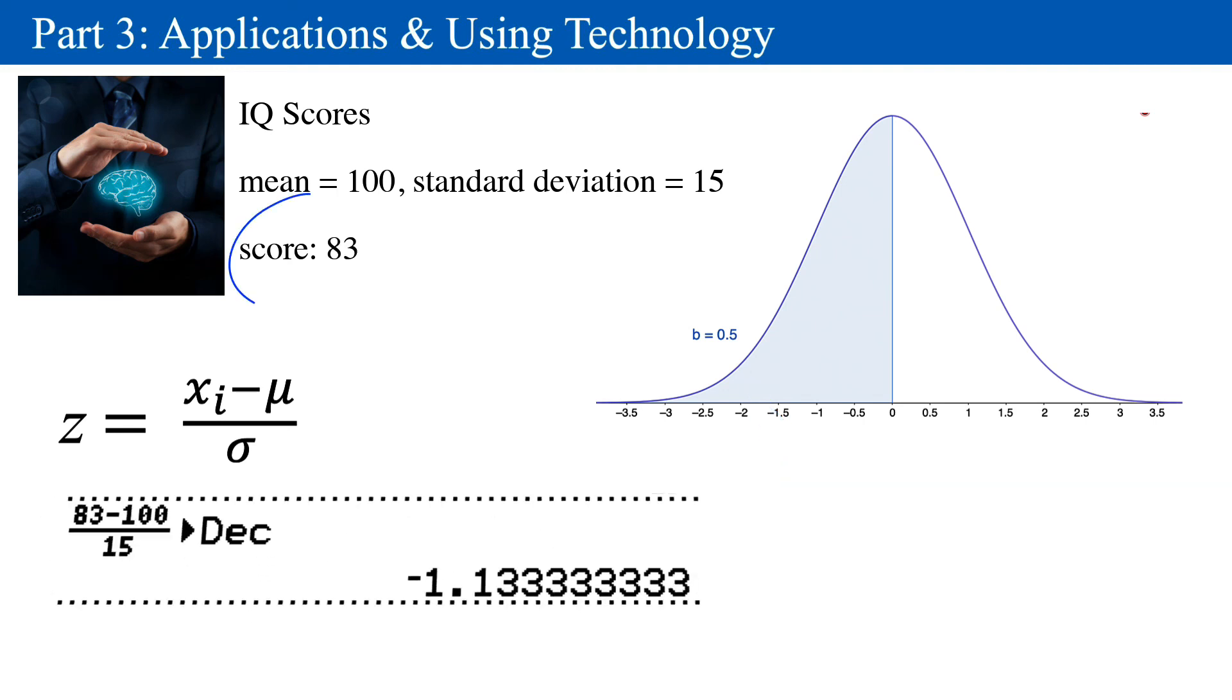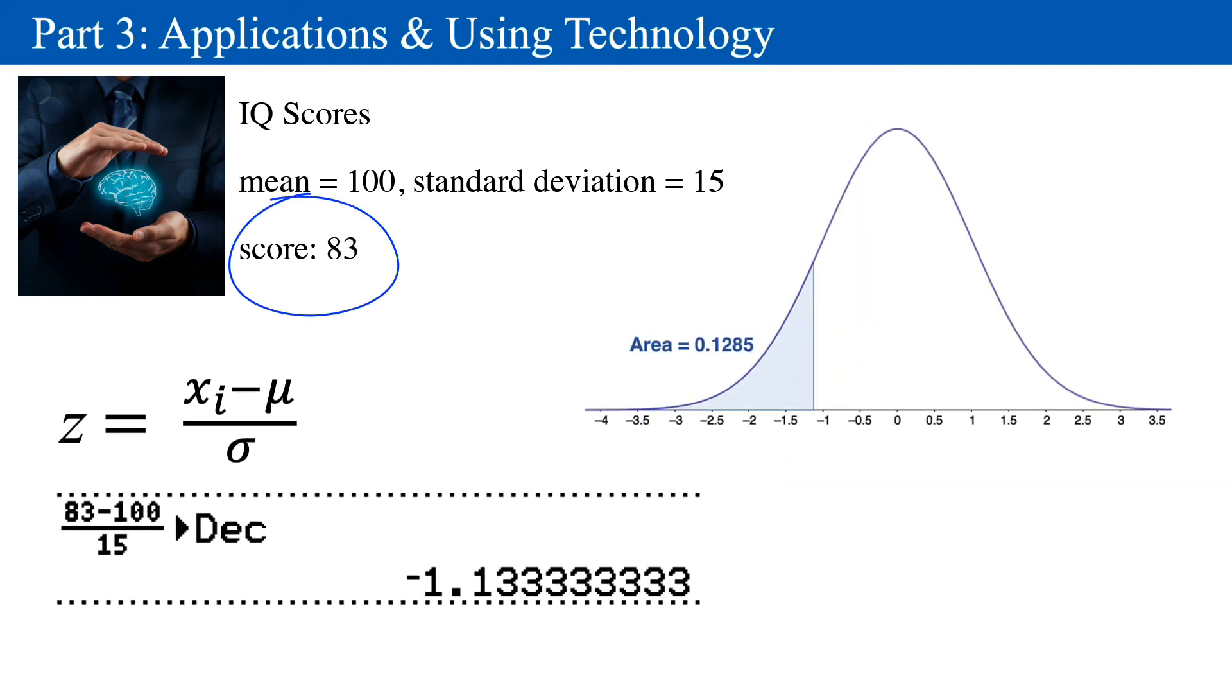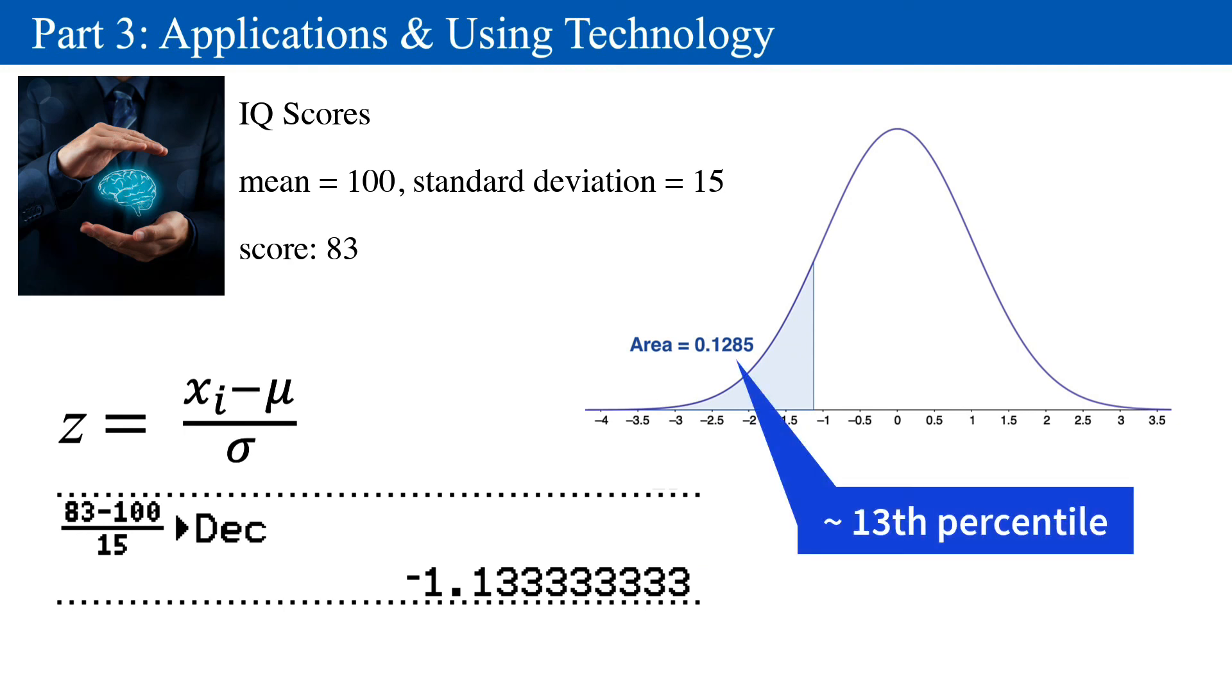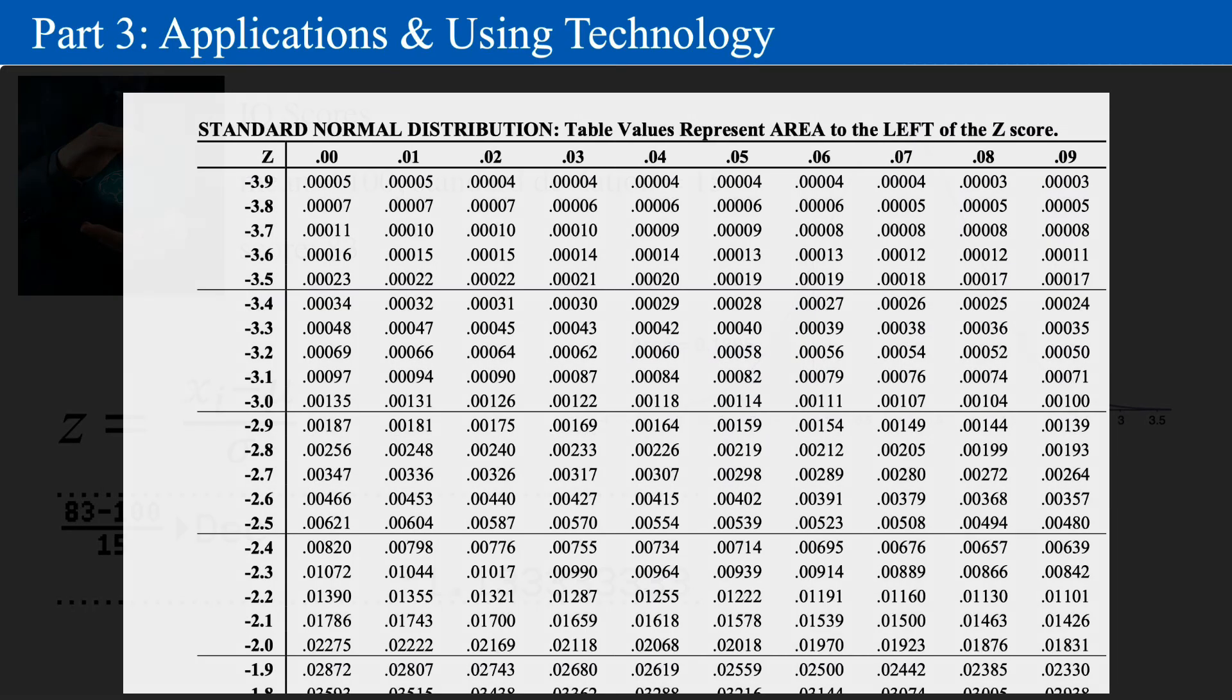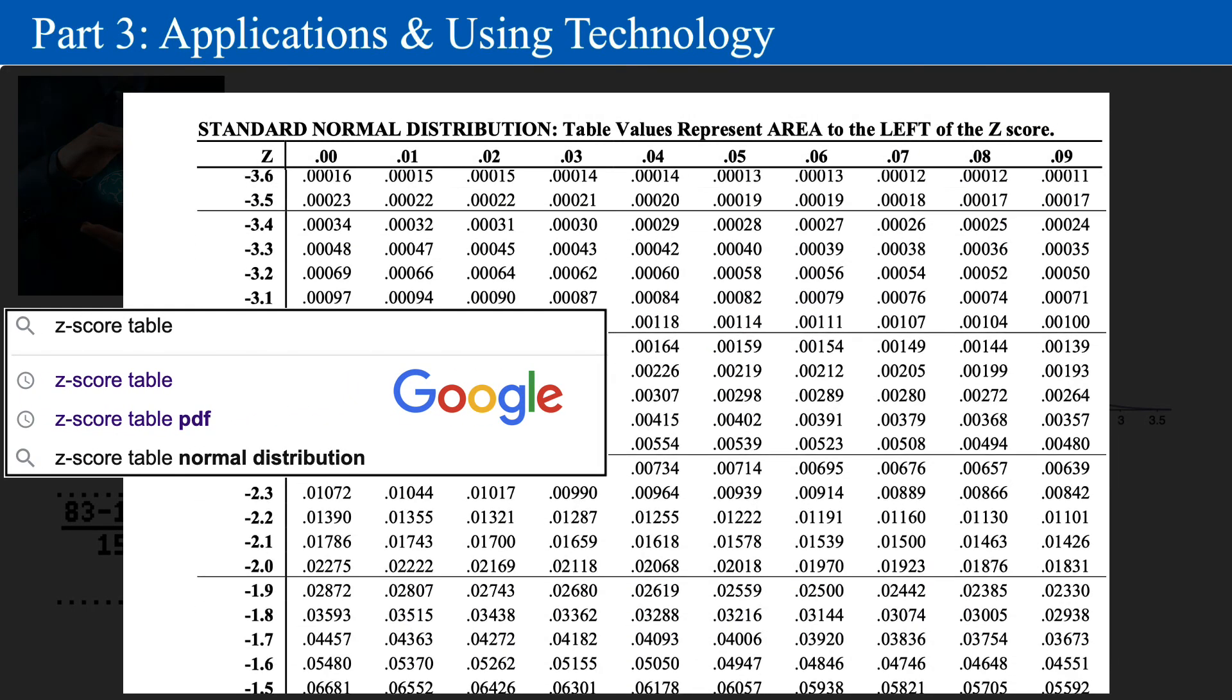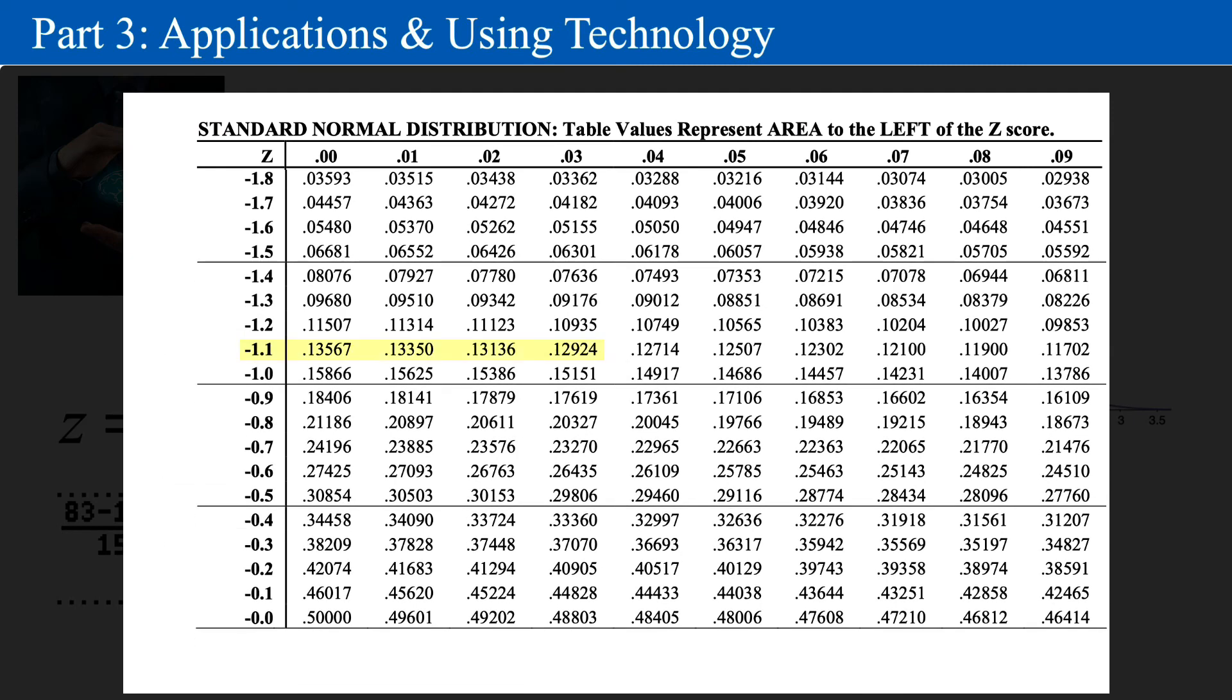A person with an IQ of 83 has a z-score of negative 1.1333. And on the normal distribution, this corresponds to an area of 0.1285, which is approximately the 13th percentile. Side note, you can find a z-score table by searching the internet. You take the z-score, and it tells you the area under the curve, starting from the left tail.